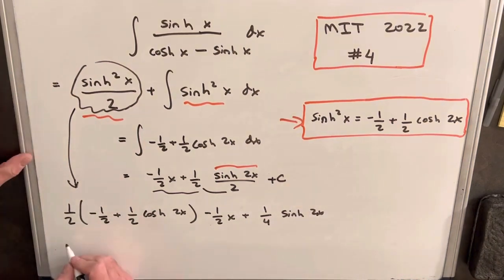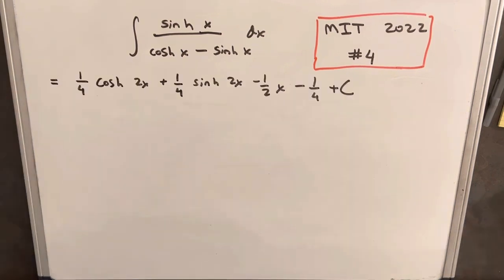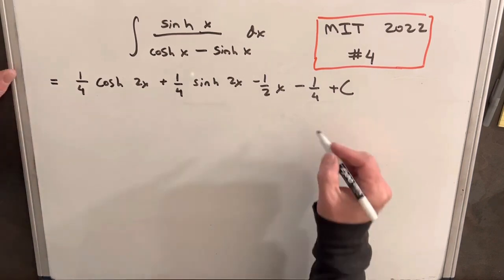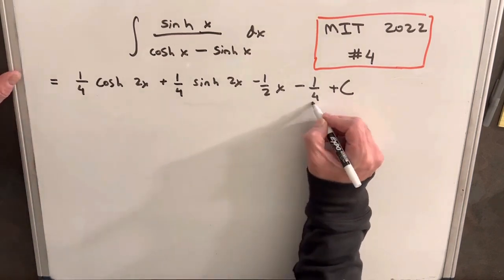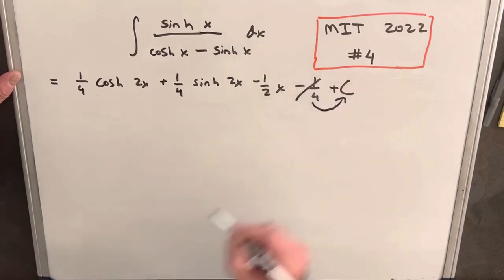Now let's just combine terms and see what we get. So we're going to distribute this in here. We'll have minus 1 fourth plus 1 fourth cosh 2x minus 1 half x plus 1 fourth sinh 2x. All right, so I've moved this to the top of the board. I'm just going to continue trying to simplify. So we can get rid of this minus 1 fourth because it's just a number, and it's going to be absorbed in this constant. So let's forget about that.